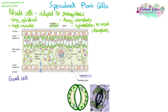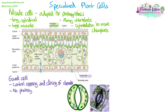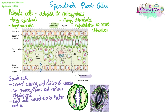Guard cells are found either side of the stomatal pores. Their function is to control the opening and closing of stomata, giving them a role in both gas exchange and water movement within the plant. They do contain chloroplasts, visible as green structures in the microscope image, but they do not carry out photosynthesis. The cell walls around the stoma edge of the guard cell are thicker and more rigid, containing more cellulose, whereas at the tips and outer edge the cell wall is more flexible. This allows the guard cell to create its shape and open or close the pore. They also have lots of carrier proteins in their membrane to allow them to transport ions.